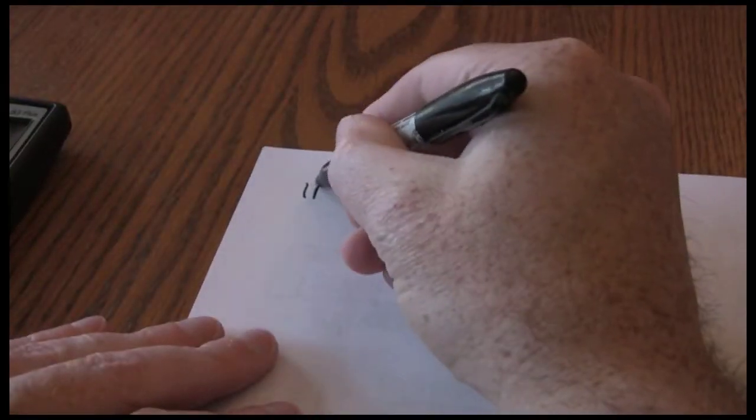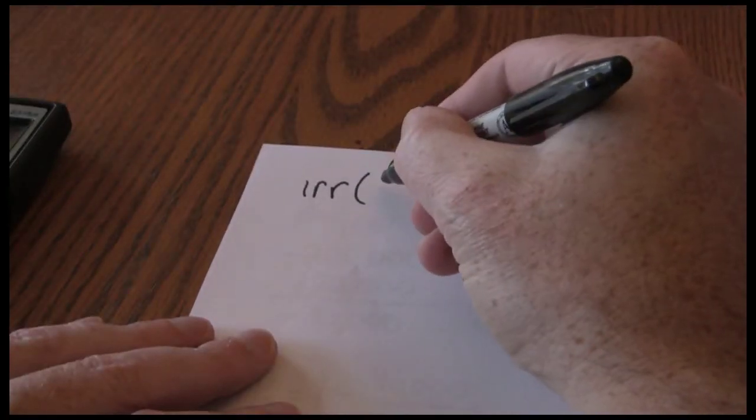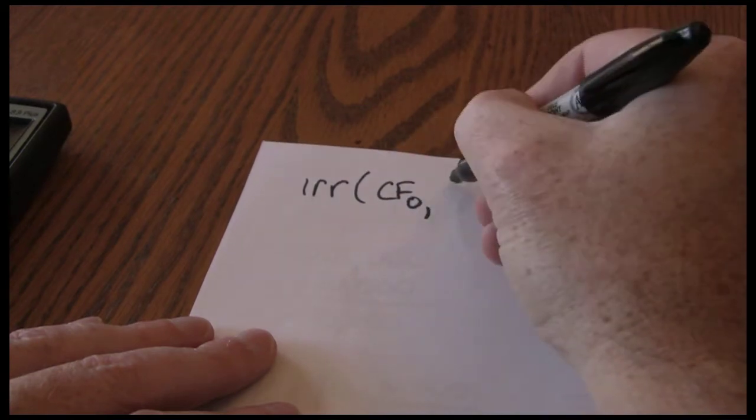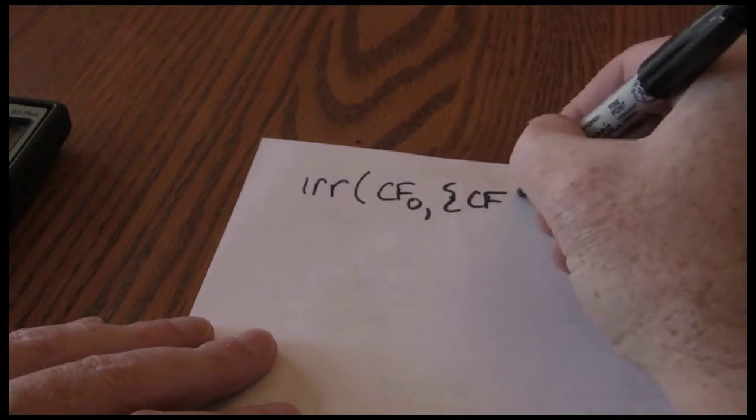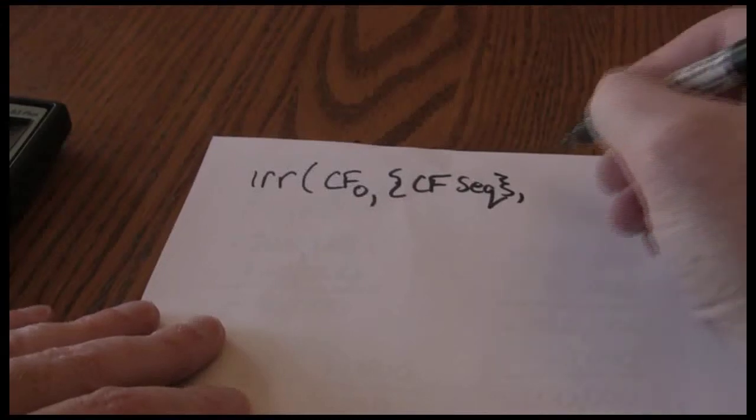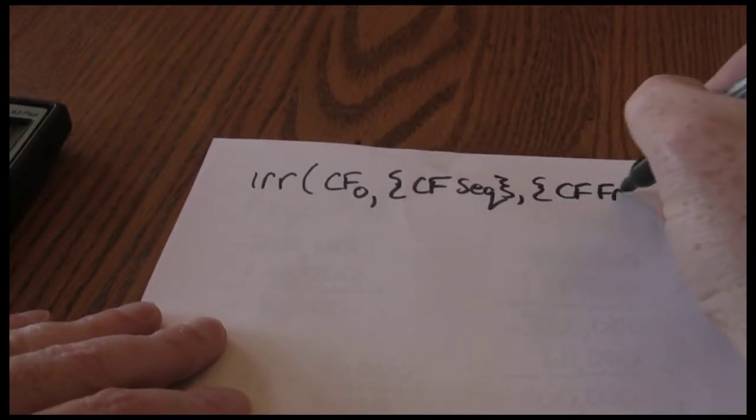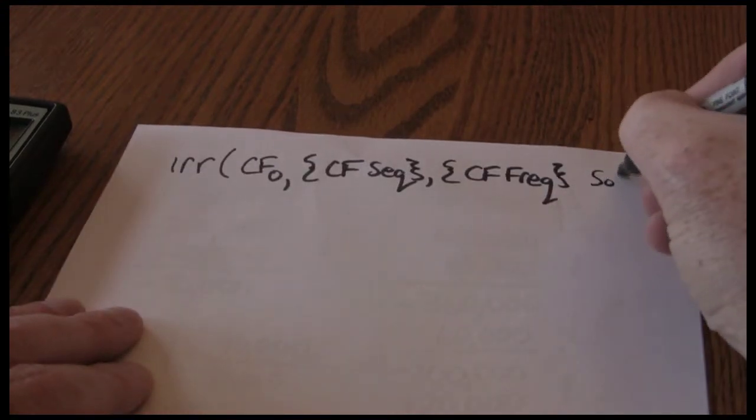Remember for the TI-83 and TI-84 the internal rate of return starts with the CF-0, then goes with your cash flow sequence, and then the cash flow frequency. And then we solve.